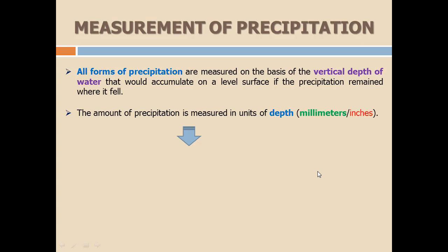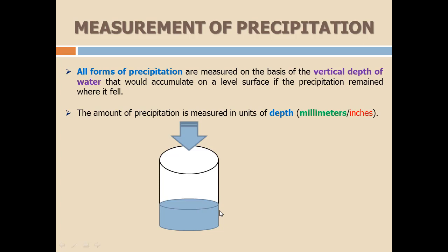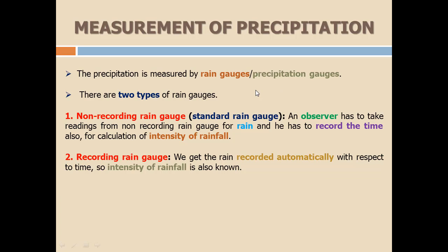For example, if it is raining and you place a cylindrical container beneath the rain, the water fills up to some level. Measuring this depth in the cylinder gives you the amount of precipitation in millimeters or inches.